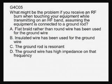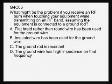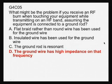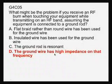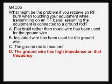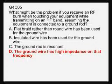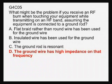What might be the problem if you receive an RF burn when touching your equipment while transmitting on an HF band, assuming the equipment is connected to a ground rod? The problem could be that the ground wire has a high impedance on that frequency. Your ground wire may be long enough to be resonant on the frequency you're using and is no longer an effective ground. You need to keep your grounding wire as short as possible — this has actually happened to the instructor when his ground wire was too long.